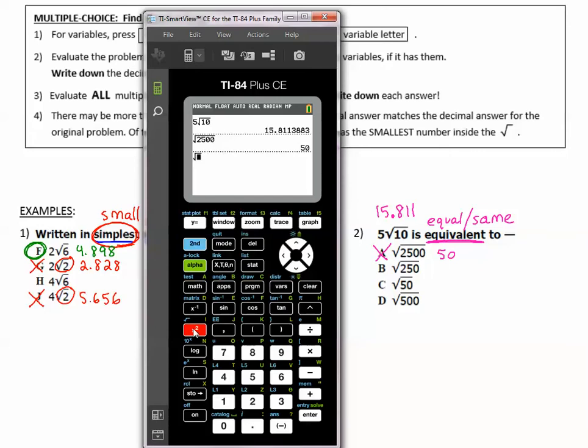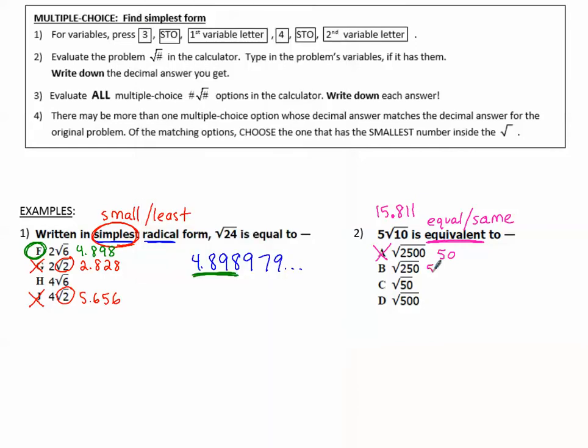Second x squared, 250. And that one is equivalent, equal, 15.811. So B is the correct answer.